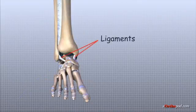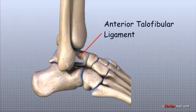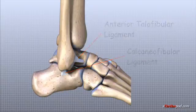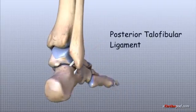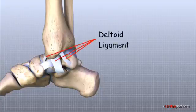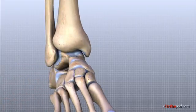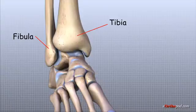Ligaments on both sides of the ankle joint help hold the bones together and stabilize the ankle. Three ligaments make up the lateral ligament complex: the anterior talofibular ligament, the calcaneofibular ligament, and the posterior talofibular ligament. A group of ligaments together called the deltoid ligament support the medial side of the ankle. Ligaments are also important in connecting the distal tibia and distal fibula at the lower end of the leg where it forms the ankle mortise.